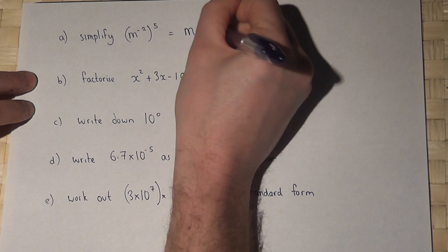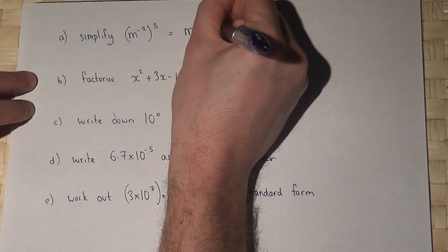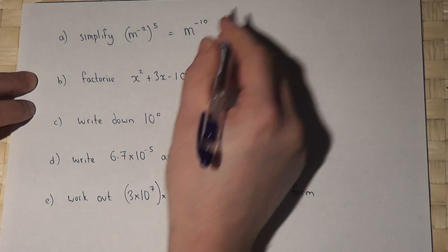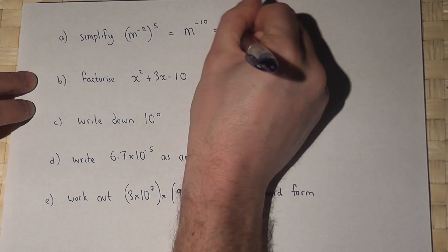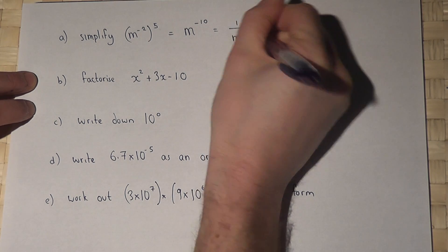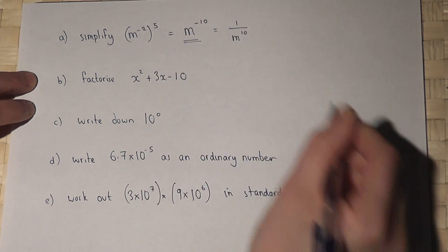The answer is m to the power of minus ten. Now just as an aside, a negative power means one over, so this means one over m to the power of ten. But that would be the correct answer in the exam for this question.